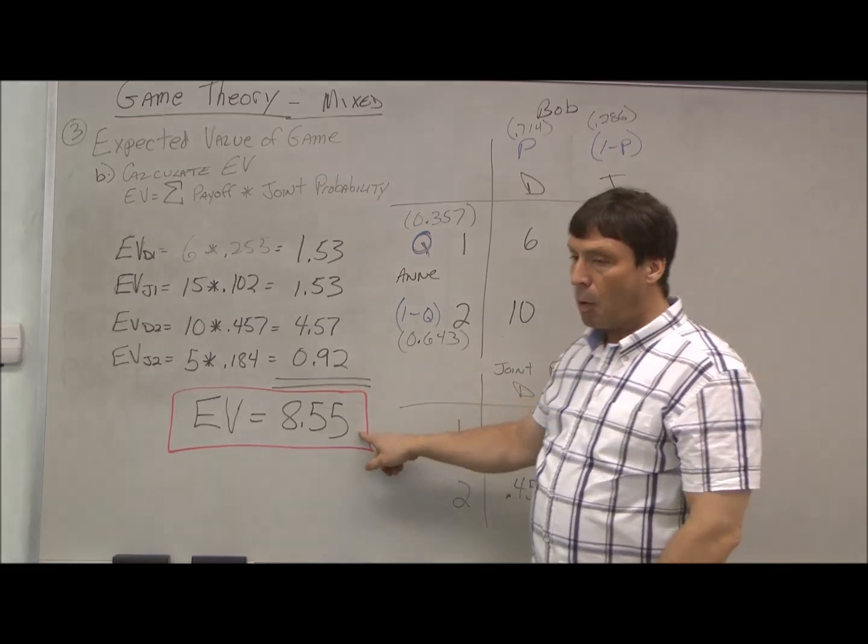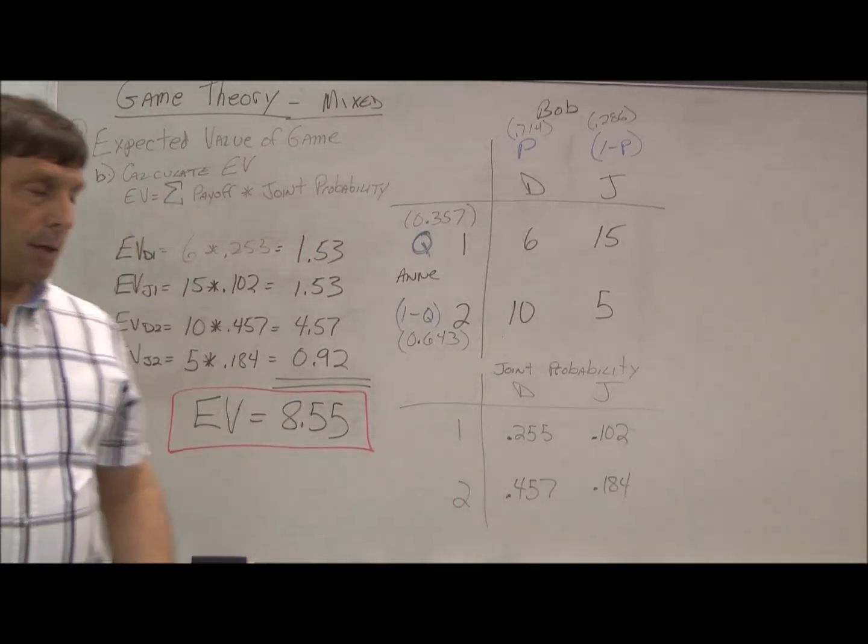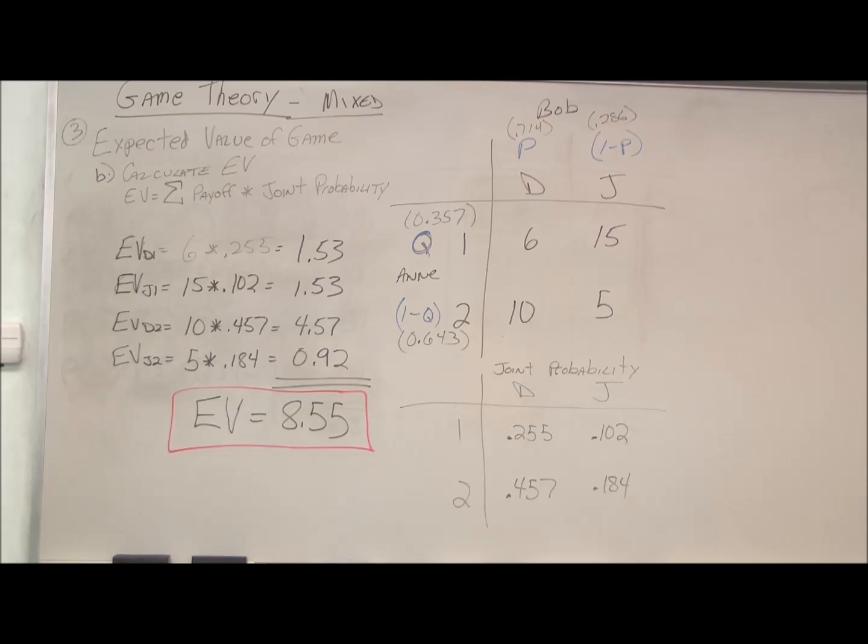So these are my individual values. I add them together and the expected value of the game is 8.55. So in the long term, as we play this game long enough, Annie will expect an average of 8.55 and that will be Bob's payout, or the value of the game.